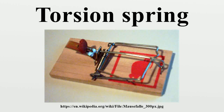A torsion spring is a spring that works by torsion or twisting — a flexible elastic object that stores mechanical energy when it is twisted. When it is twisted, it exerts a force in the opposite direction, proportional to the amount it is twisted. There are two types.